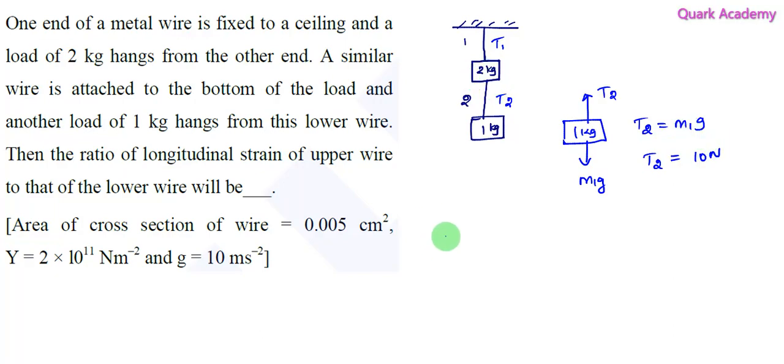For the 2 kg mass, M2g and T2 are acting downward, T1 is acting upward. T1 equals T2 plus M2g. M2 is 2 kg, g is 10. T2 is 10N, so T1 is 10 plus 20, which equals 30N. T2 is 10N.